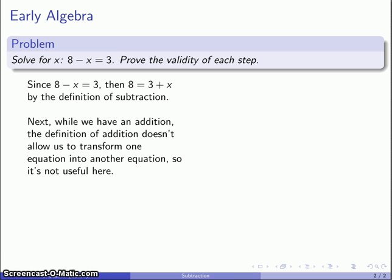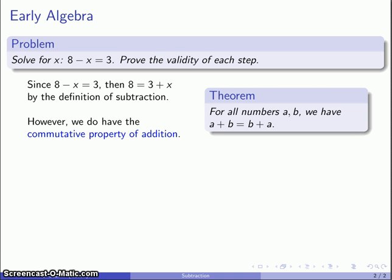On the other hand, we do have the commutative property of addition. So if I have two numbers a and b, if I ever see a plus b, I can immediately replace it with b plus a. Well, is this what we need?